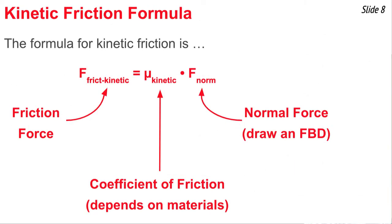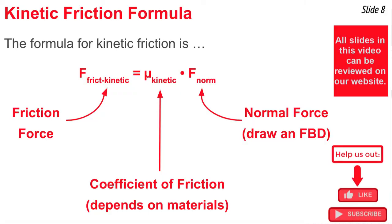Now let's talk about the mathematics of friction. The formula for kinetic friction is: the force of kinetic friction equals the coefficient of kinetic friction (mu kinetic) multiplied by the normal force. The value of mu kinetic depends on the materials and is typically given or found in references. The normal force — how strongly the two surfaces are pressed together — can usually be determined by drawing a free body diagram.